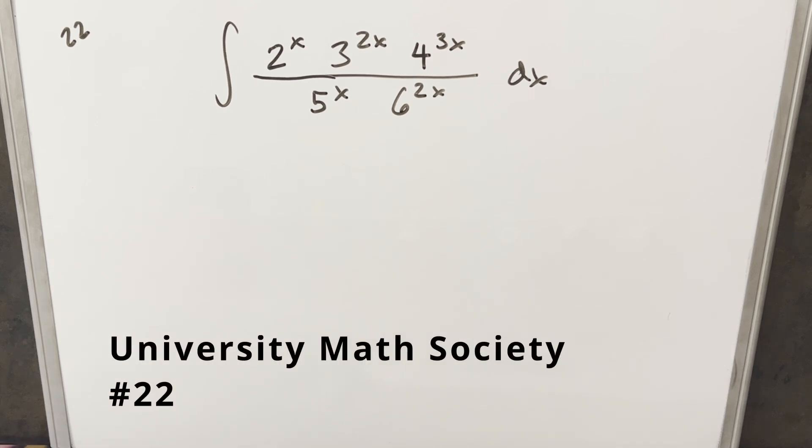Okay, we have here today another integral from the University Math Society, problem 22. We have the integral of 2 to the x times 3 to the 2x times 4 to the 3x over 5 to the x times 6 to the 2x dx.